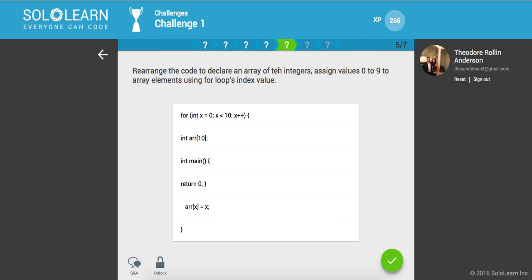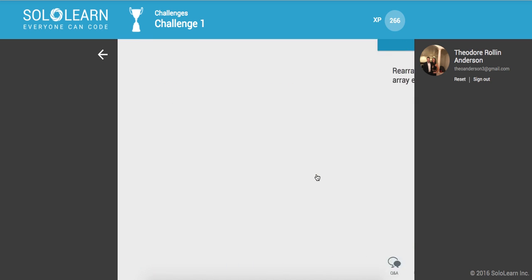Rearrange the code to declare an array of ten integers, assign values zero to nine to array elements using for loops index values. So this is the beginning. We're going to declare this integer array of ten. But actually, what we need to do, we need to have this in the main method. For int... actually, it's less than ten. Oh, here we go. So we need to declare an array ahead of time, and then put this in the middle.